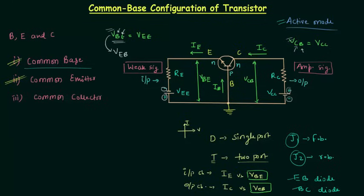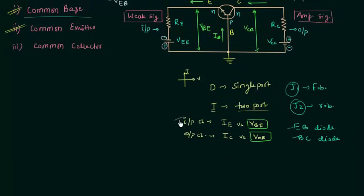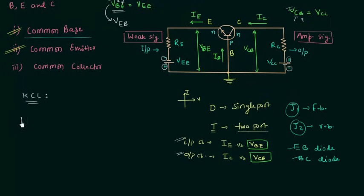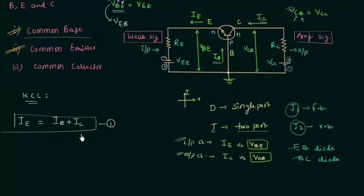I will not explain the input and output characteristics in this lecture; we will continue with them in the next lecture. In this lecture, I will use KCL to obtain the relation between the emitter current, base current, and collector current. From Kirchhoff's current law, the sum of entering currents equals the sum of leaving currents. In this circuit, IE is the only leaving current, so IE equals IB plus IC.